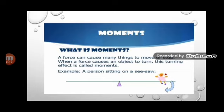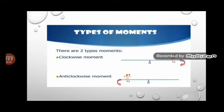There are two types of moments. One is clockwise moment and another is anticlockwise moment. If, because of the applied force, the object turns in a clockwise direction, that is called clockwise moment. If the object turns in an anticlockwise direction, that is anticlockwise moment. Clockwise moments are taken as negative and anticlockwise moments are taken as positive.